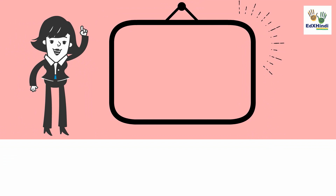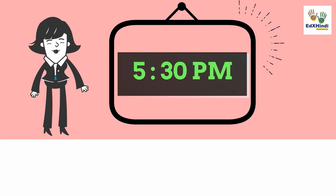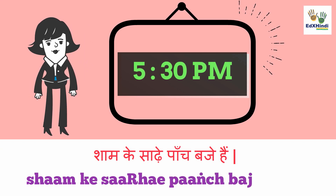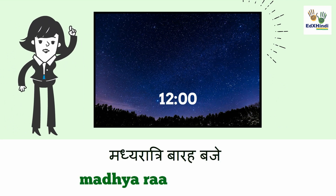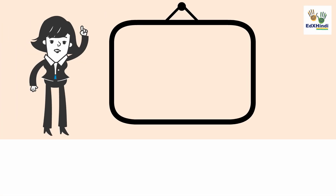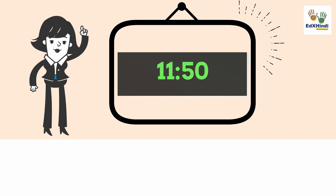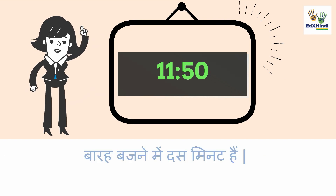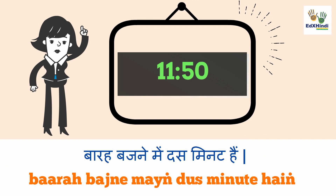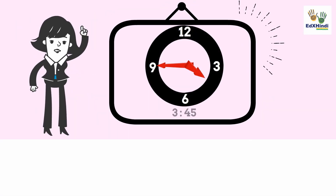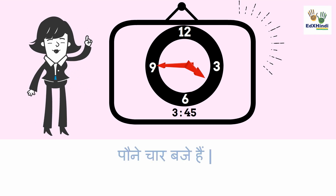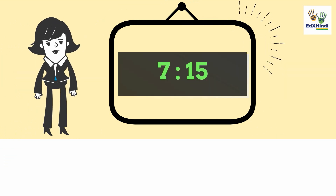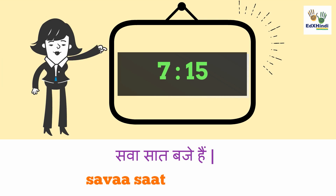If I want to say it's five thirty p.m., I can say: shaam ke saare paanch bajay hai. If I want to say midnight, 12 a.m., I can say: madhe ratri, barah bajay hai. If I want to say ten minutes to twelve, I can say: barah bajne mein das minit hai. If I want to say three forty-five, I can say: paune chaar bajay hai. If I want to say it's seven fifteen, I can say: sawa saat bajay hai.